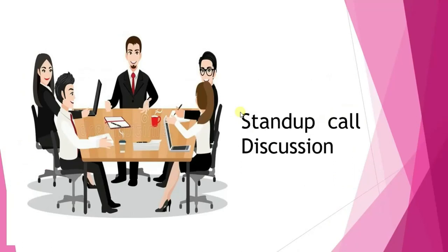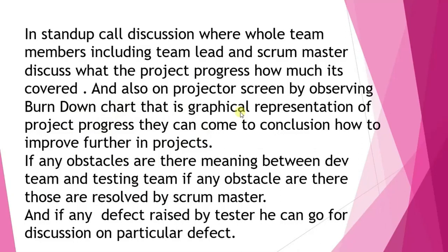Next is the 15 to 30 minute stand-up call discussion — a meeting where the whole team, including the team lead and scrum master, discusses project progress: how much is covered and how to improve further. On a projector screen they observe the burndown chart, a graphical representation of project progress. If any obstacles or issues arise between the development team, testing team, or production team, the scrum master is the person who resolves them.